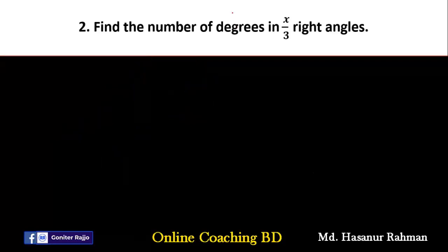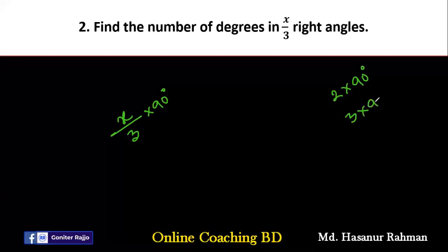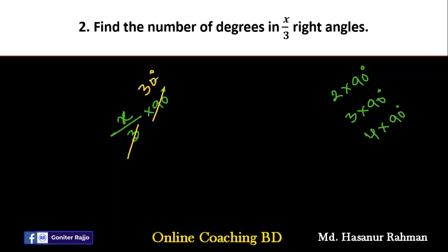Number two says: find the number of degrees in x/3 right angles. x/3 right angles means x/3 multiplied by 90 degrees. If one right angle is 1×90, two right angles is 2×90, then x/3 right angles will be x/3 multiplied by 90. Dividing 90 by 3 gives 30, so the final answer is 30x degrees.